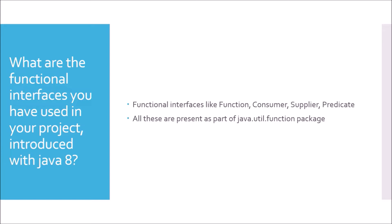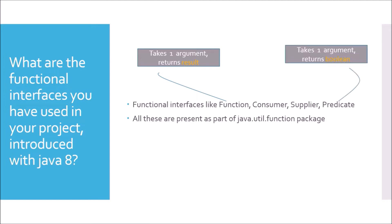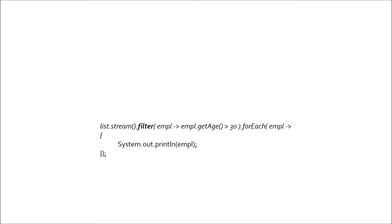On a high level: Function takes one argument and returns a result. Predicate takes one argument also but returns a boolean. To understand where Predicate is used — in Java 8, the filter operation of Stream accepts a Predicate argument. You can see in rt.jar that filter is defined as public abstract java.util.stream filter accepting a predicate argument. So Predicate is also part of java.util.function.